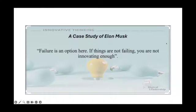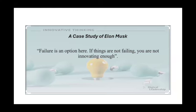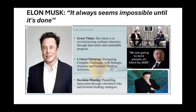We shall use Elon Musk as a case study. He said: 'Failure is an option here. If things are not failing, you are not innovating enough.' Elon Musk believed that failure is a mark that you have started something significant, and if you don't relax or be discouraged, you can achieve excellence in the future. These are key characteristics that have made Elon Musk successful.